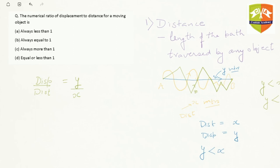In this case, clearly since y is less than x, this ratio of displacement by distance will always be less than or equal to 1. Why equal to? When x is equal to y, then the ratio will be equal to 1.